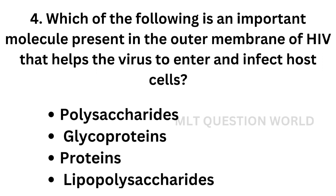Question number 4: Which of the following is an important molecule present in the outer membrane of HIV that helps the virus to enter and infect host cells? Option A, polysaccharides; option B, glycoproteins; option C, proteins; option D, lipopolysaccharides.